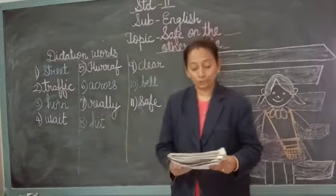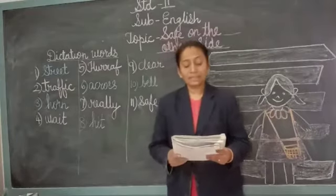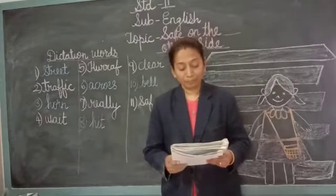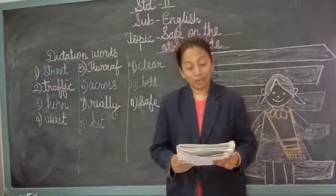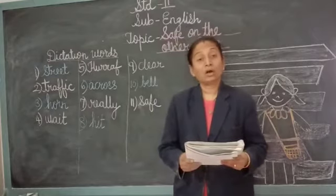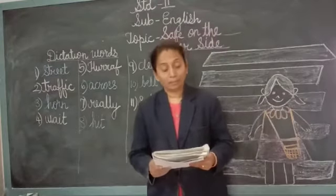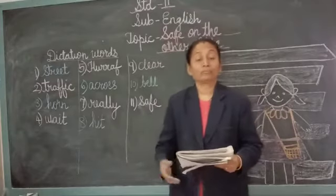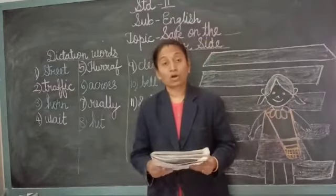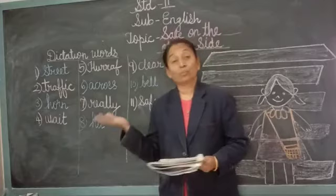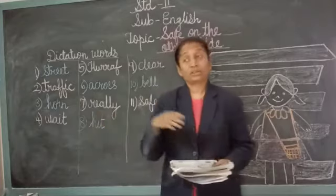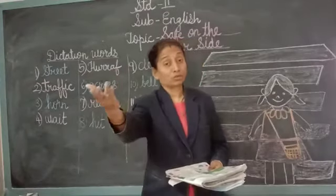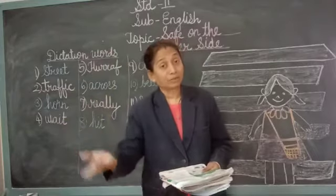Now I am going to read the poem for you. 'Up the street I look to see if any traffic is near me. Down the street I look as well and listen for a horn or a bell.' This boy wants to cross the road. What does he do? He looks on both sides — on the right side and on the left side — because he wants to go to the other side of the road.